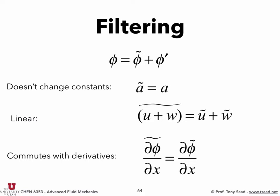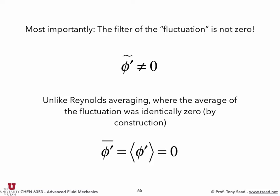So the filter of a derivative is equal to the derivative of the filtered quantity. Most importantly, the filter of the fluctuation is not zero. It's not a fluctuation — it's a subgrid quantity that was not filtered. Think about the filter operation as applying a sieve: once you apply the sieve to a bunch of rocks and then apply the same sieve to whatever went through, they're still going to go through.